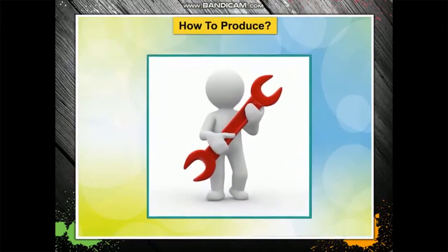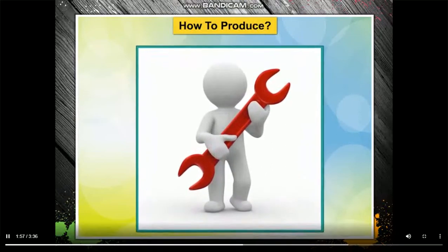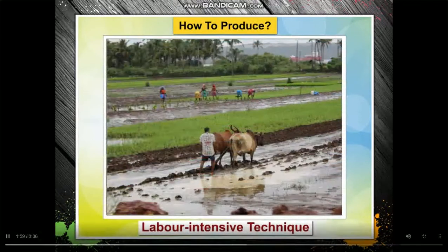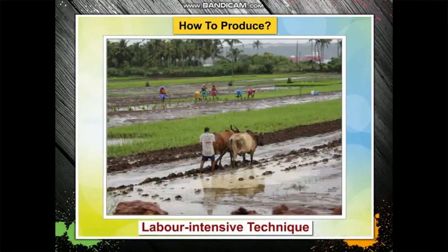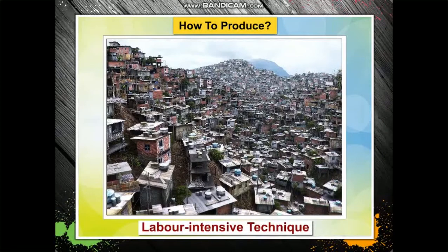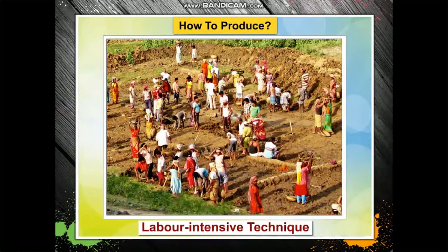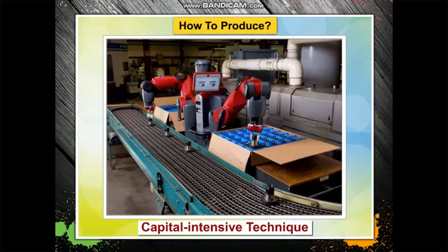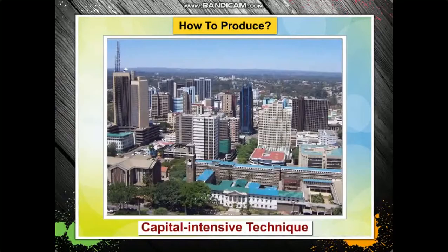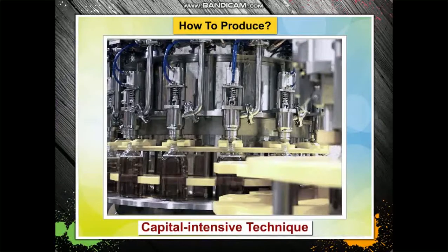The next problem is how to produce — it is mainly the problem of choice of techniques of production. The labor-intensive technique makes more use of labor than capital; less developed countries with abundant labor reserves opt for this technique. The capital-intensive technique makes more use of capital than labor; developed countries with abundant capital reserves opt for this technique.